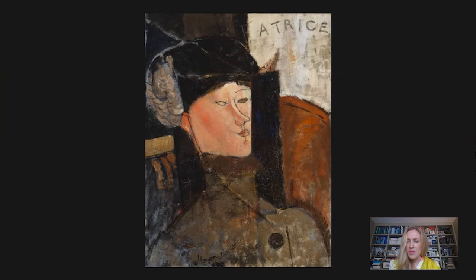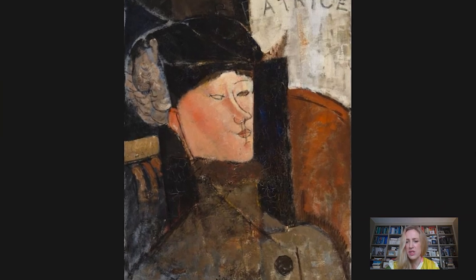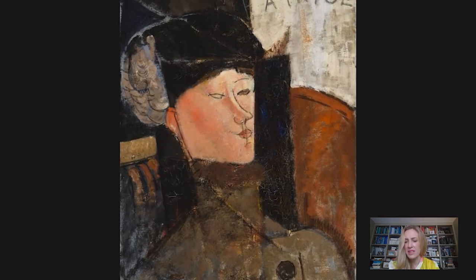So who was Beatrice Hastings? Well, she's a really interesting character. She was born in 1879 — a little bit older than Modigliani — in London, and raised in South Africa. But by the time she met Modigliani, she was living in Paris, and the two of them were very much part of a bohemian world, and the way Modigliani paints this picture really gives us that impression.